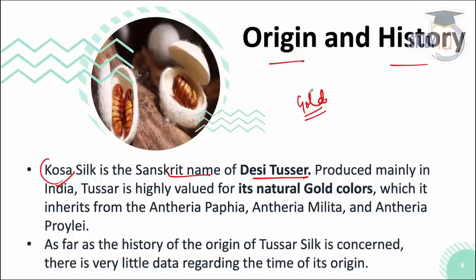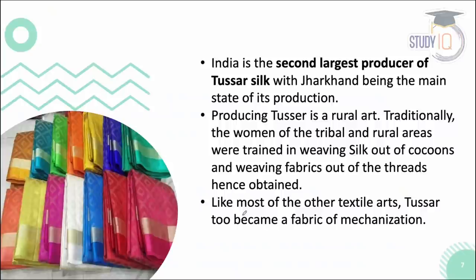Tassar silk is famous for its natural gold color. The moth species from which it is obtained include Antheraea paphia, Antheraea mylitta, and Antheraea proylei. India is the second largest producer of Tassar silk, with Jharkhand being the main production hub, along with Bhagalpur in Bihar and Malda in West Bengal.